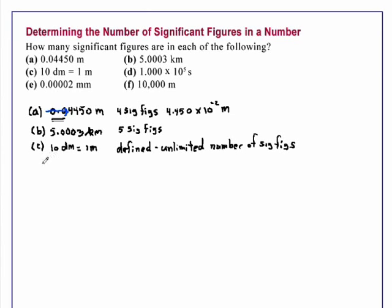Example D, 1.000 times 10 to the 5th seconds. Again, starting from the left, the 1 is the first non-zero digit. The trailing zeros count because there is a decimal point. That's 4 significant figures. The exponents do not add to the number of significant figures. So we have four significant figures in this number.